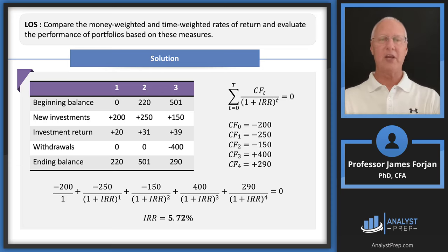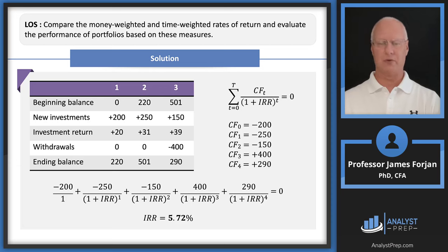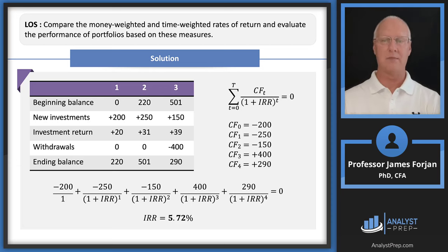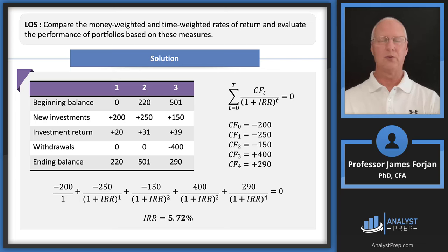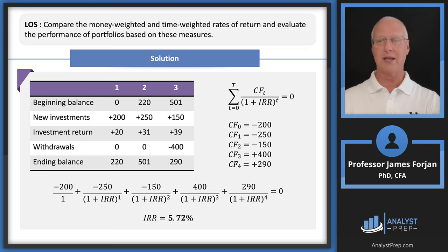In the calculator: CF0 = −200, CF1 = −250, CF2 = −150, CF3 = +400, CF4 = +290. Hit the IRR button and you get 5.72%. I encourage you to pause the recording now and confirm you can get 5.72% in your financial calculator. The money-weighted return is appropriate when a client has lots of cash inflows and outflows at different times during a holding period — in this case, three years.